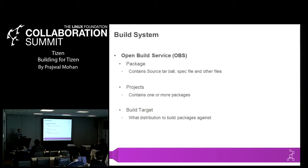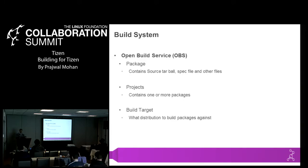Other things might include a change log, an additional patch file, or anything else required for a given spec file to work. Once you have the package, you have projects which are a collection of packages. An example of a package would be VI or GCC, and a project contains one or more packages. For example, a project called Tizen might have over a thousand packages, including GCC, binutils, Enlightenment packages, and applications.